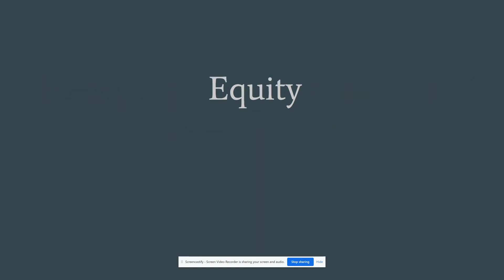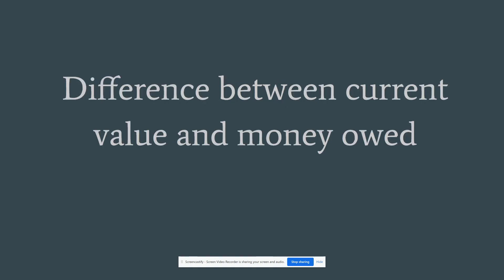Equity. That is the difference between current value and money owed. For example: if you owe $10 but your property is worth $30, when you sell it you'll make $20. That difference is your equity.